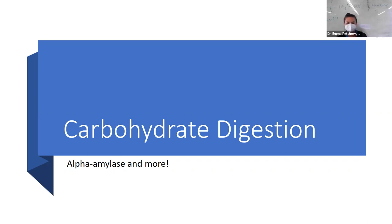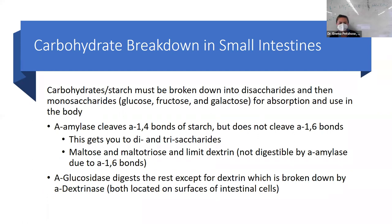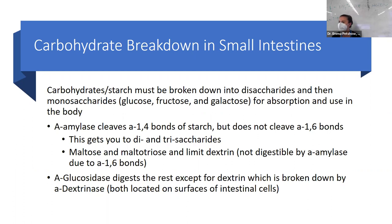Now we're going to move into the wonderful world of carbohydrate digestion — not just alpha amylase, but what else happens. We talked about alpha amylase occurring in the saliva, but then it reoccurs again in our small intestines. In the small intestines, carbs and starch must be broken down into at least disaccharides, then monosaccharides. Glucose, fructose, and galactose are three common monosaccharides that we're able to absorb and use in the body.